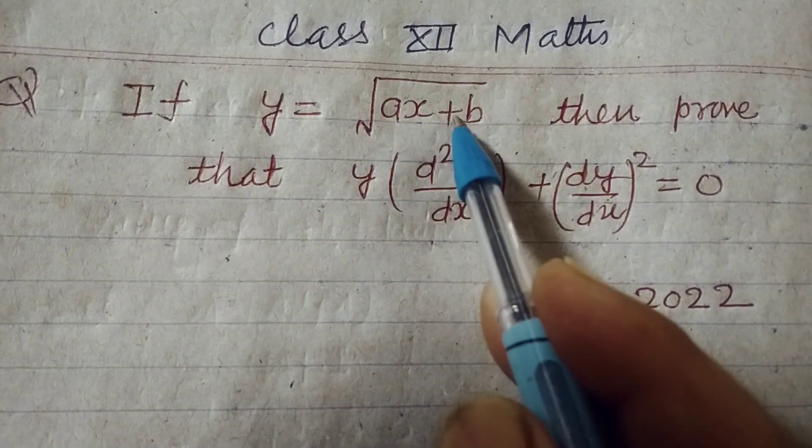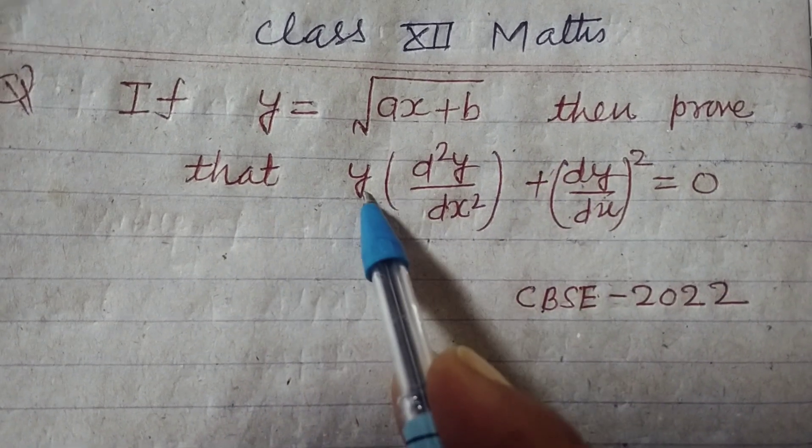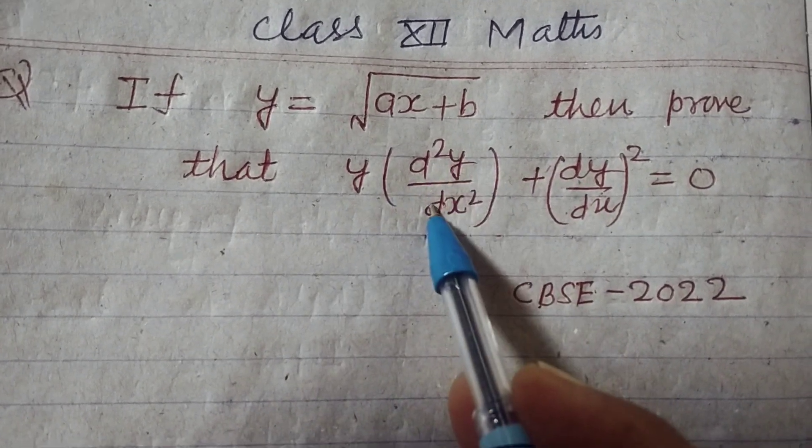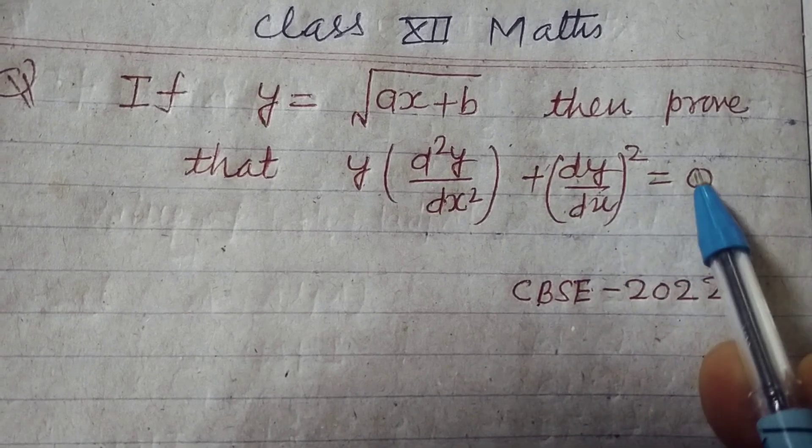If y equals square root of ax plus b, then prove that y times d square y over dx square plus dy by dx whole square equals zero.